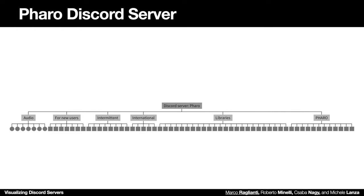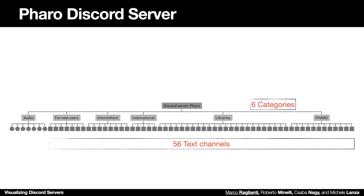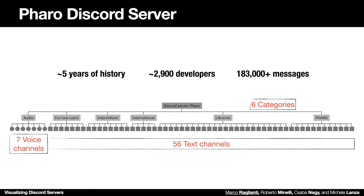Our case study, the Faro Discord server, has 6 categories, 56 text channels and 7 voice channels. Just to give a few numbers about its activity, it has about 5 years of history, 2,900 developers and more than 180,000 messages.